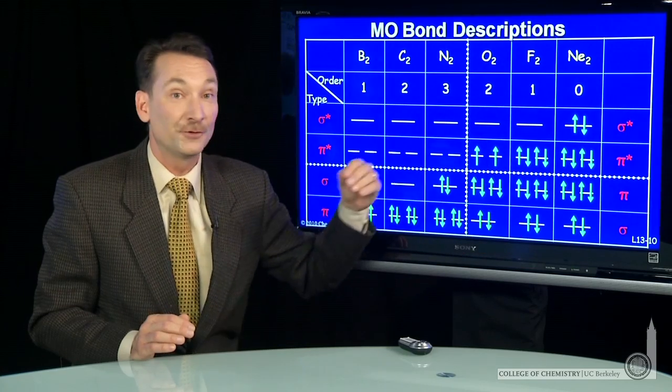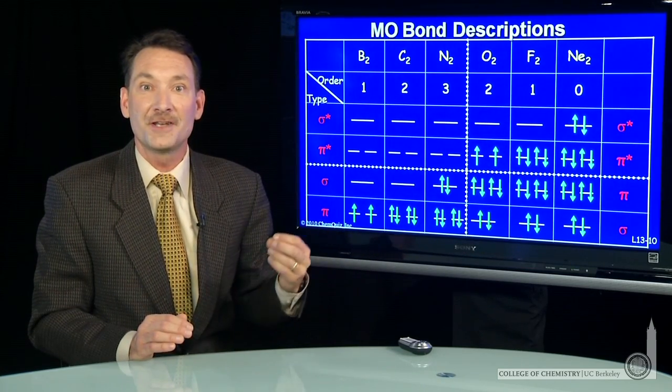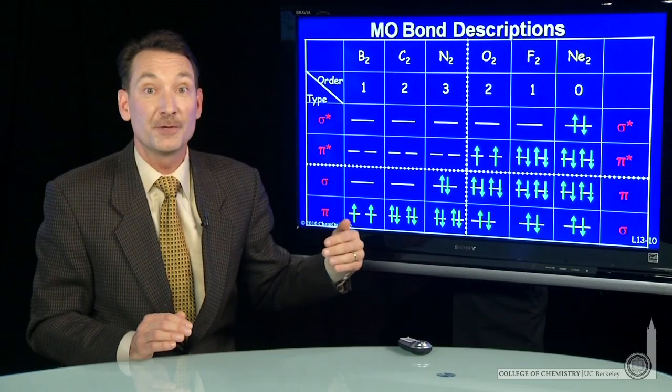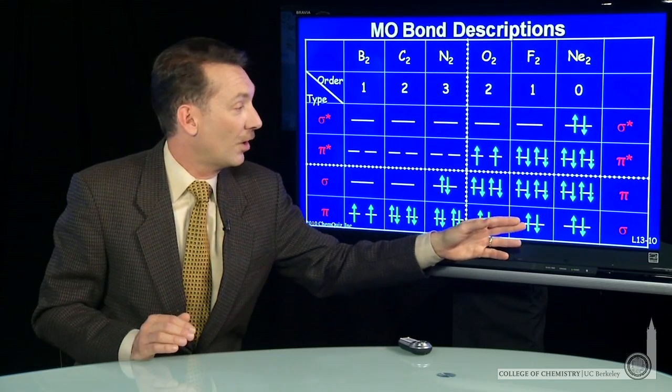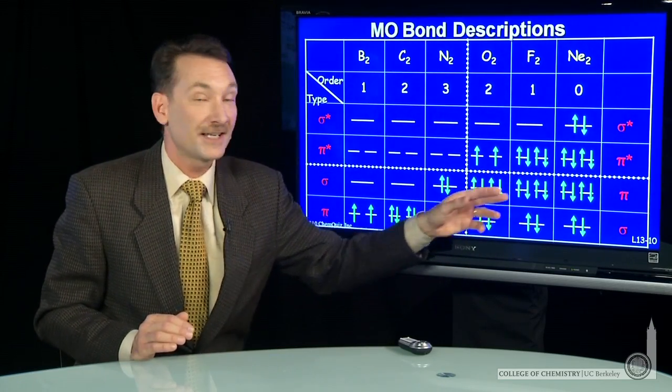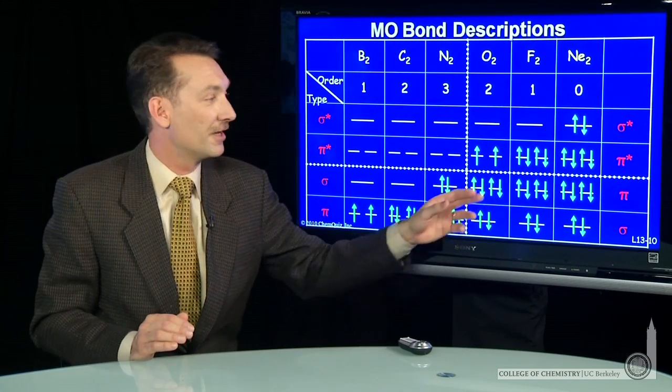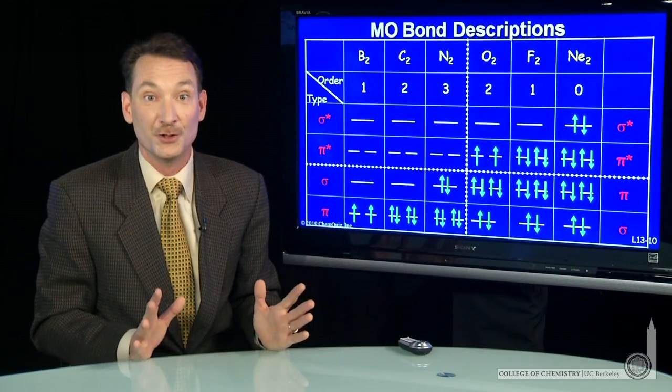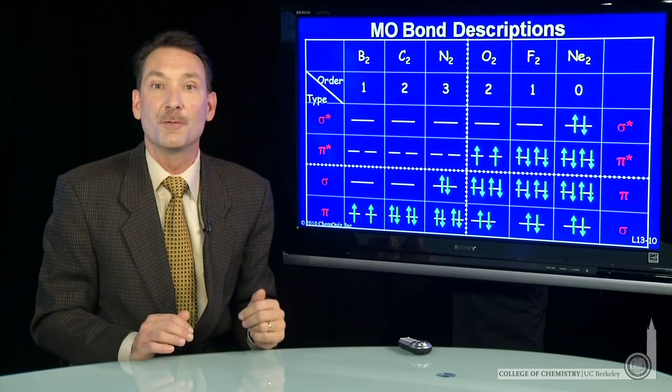We can go ahead to fluorine. For the Lewis electron dot structure for fluorine, we'd predict a single bond. Does the molecular orbital theory predict that? Well, 1, 2, 3, 4, 5, 6 bonding electrons minus 1, 2, 3, 4 anti-bonding electrons is 2. Divided by 2 gives you a bond order of 1.